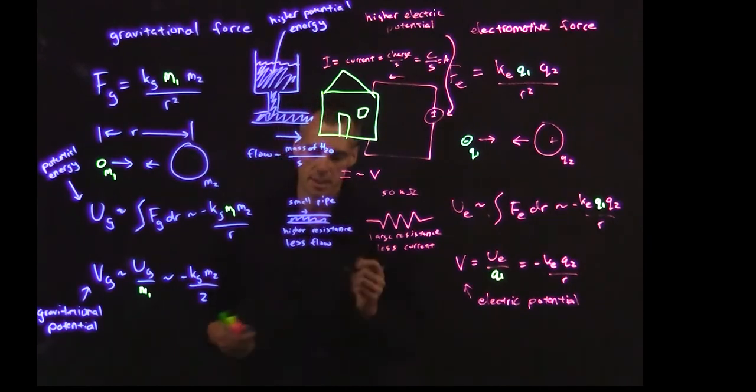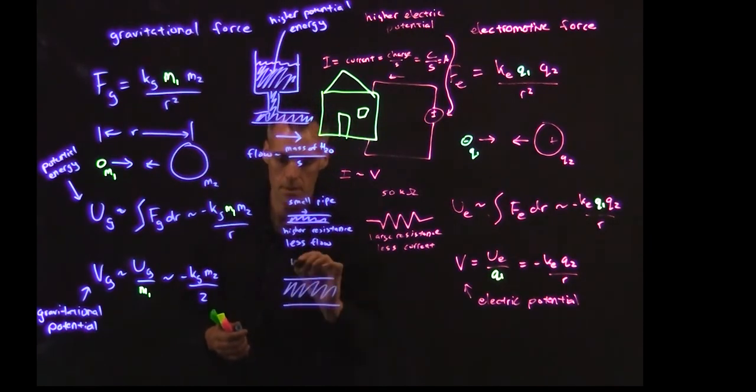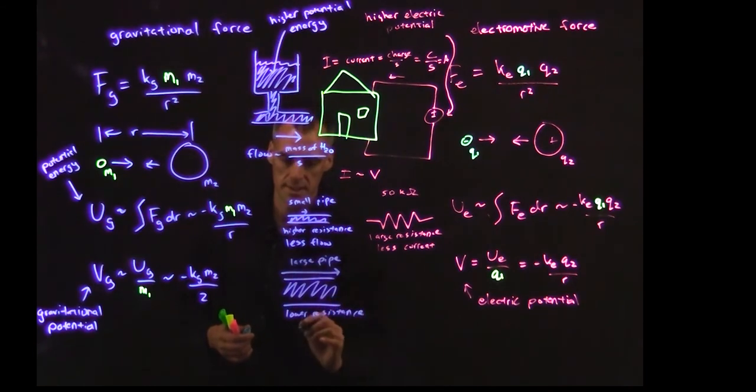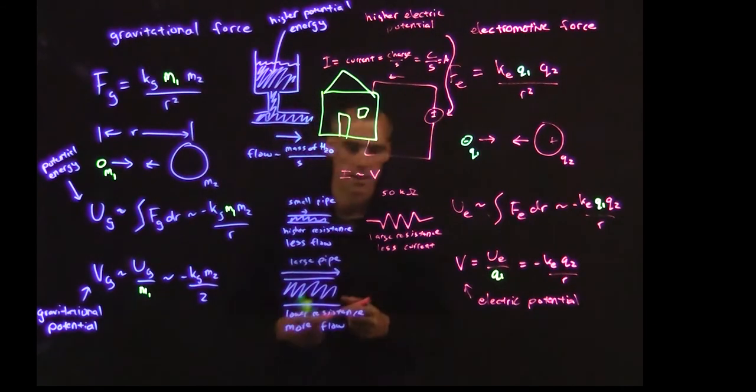Just like a small pipe would lead to less water flowing through it. And of course, if we had a big pipe, it's going to lead to a large flow of water because lower resistance is going to be related to more flow of water. And similarly, if we've got this smaller resistor here, let's say this is only 50 ohms, that's actually going to lead to a bigger current here.